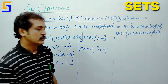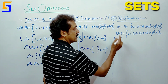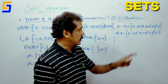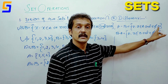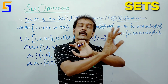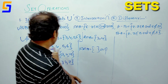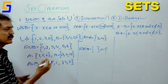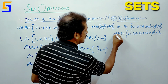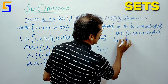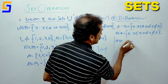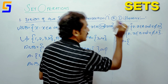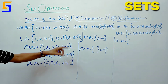Difference. It's important. A minus B is the set of all elements in A and not in B. Compare A and B — A minus B gives the set of all elements in A and not in B.